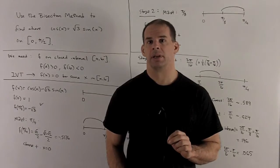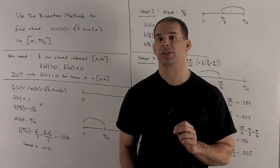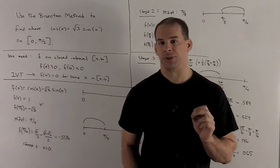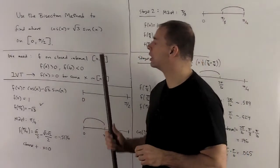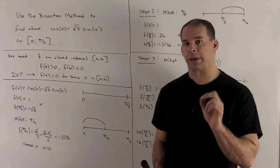Use the bisection method to find where cosine of x equals square root of 3 sine x on the interval 0 to π/2. So we're going to apply the intermediate value theorem to get the bisection method.